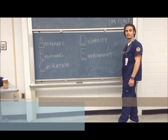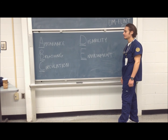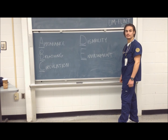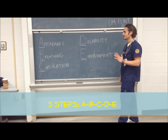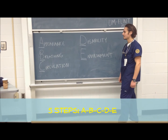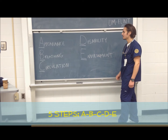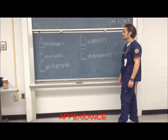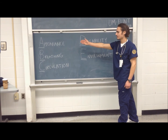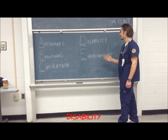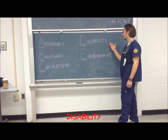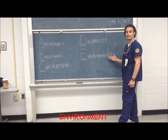Our objective today is to teach you to be able to perform a general assessment. Our general assessment consists of five steps, easily remembered as A, B, C, D, and E. A stands for appearance, B for breathing, C for circulation, D for disability, and E for environment.